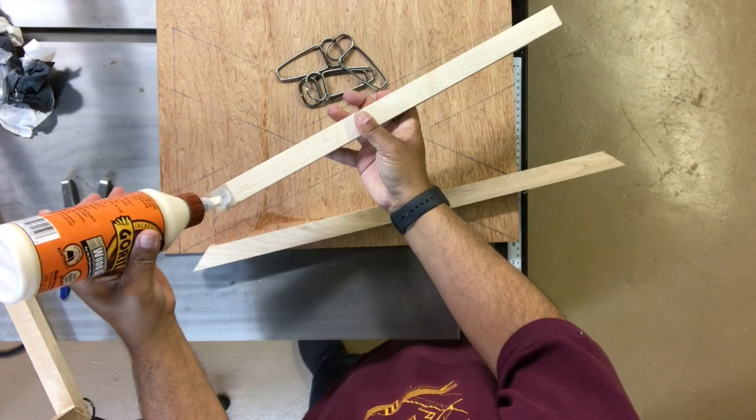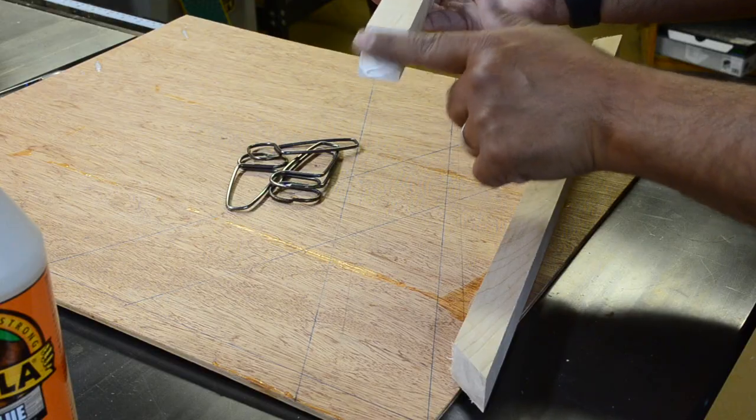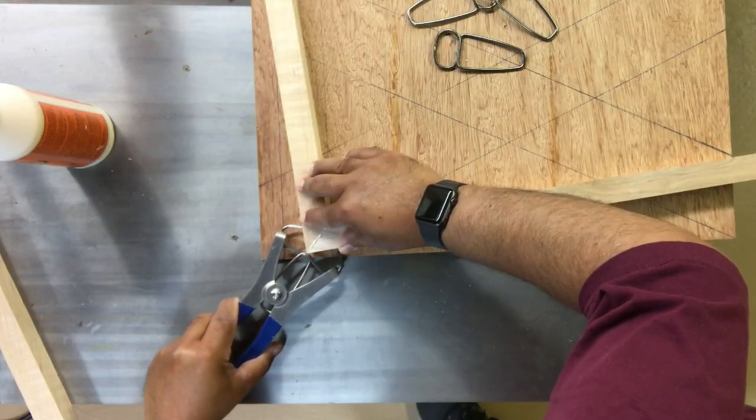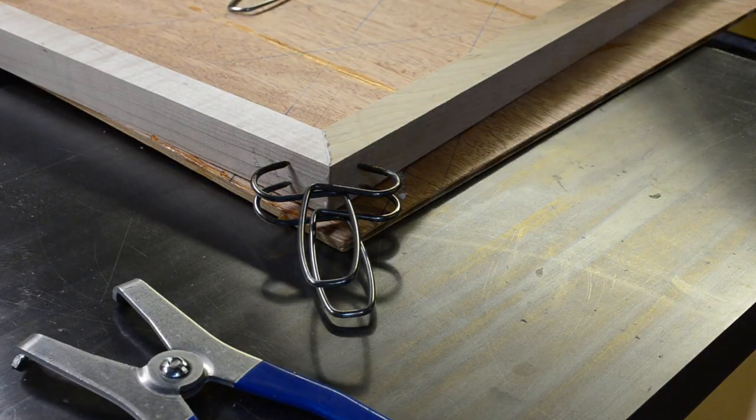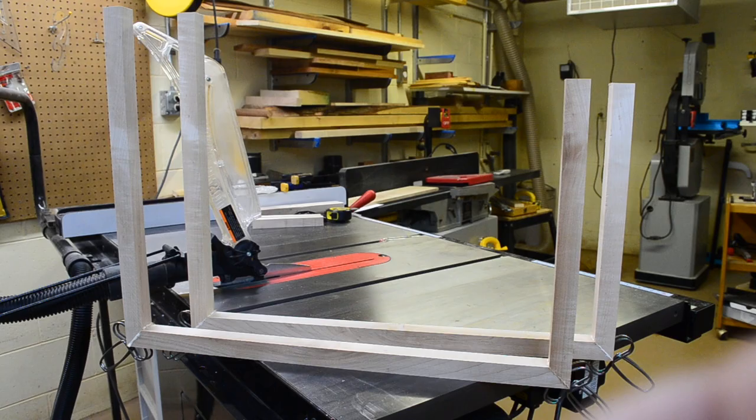The next step is to apply glue to the miters and clamp them together with spring clamps. I found after a little trial and error during the dry fit that two per miter helps ensure the joint stays in place.